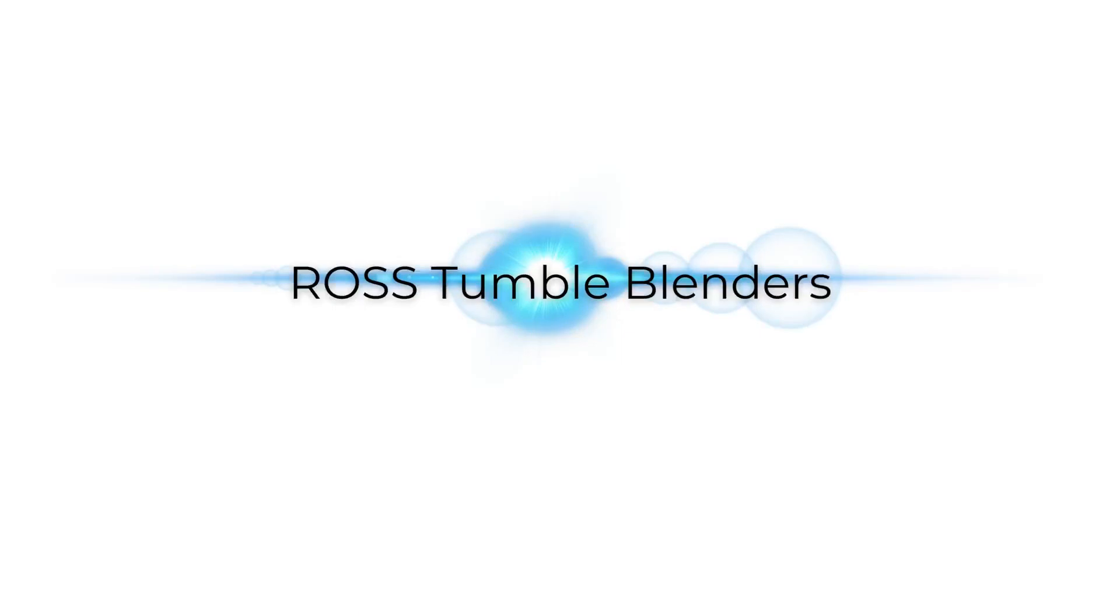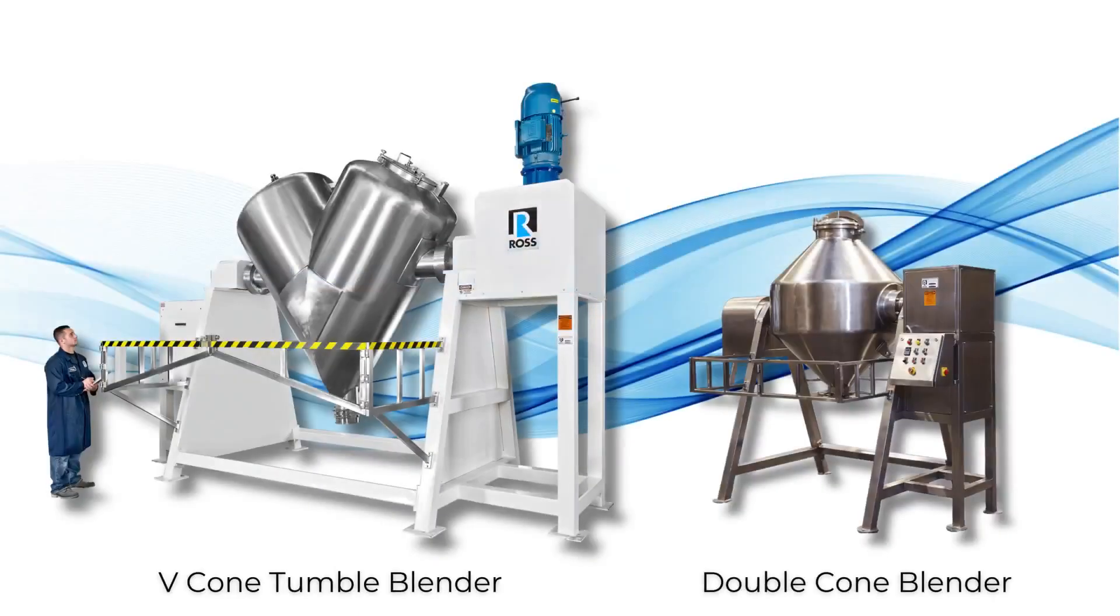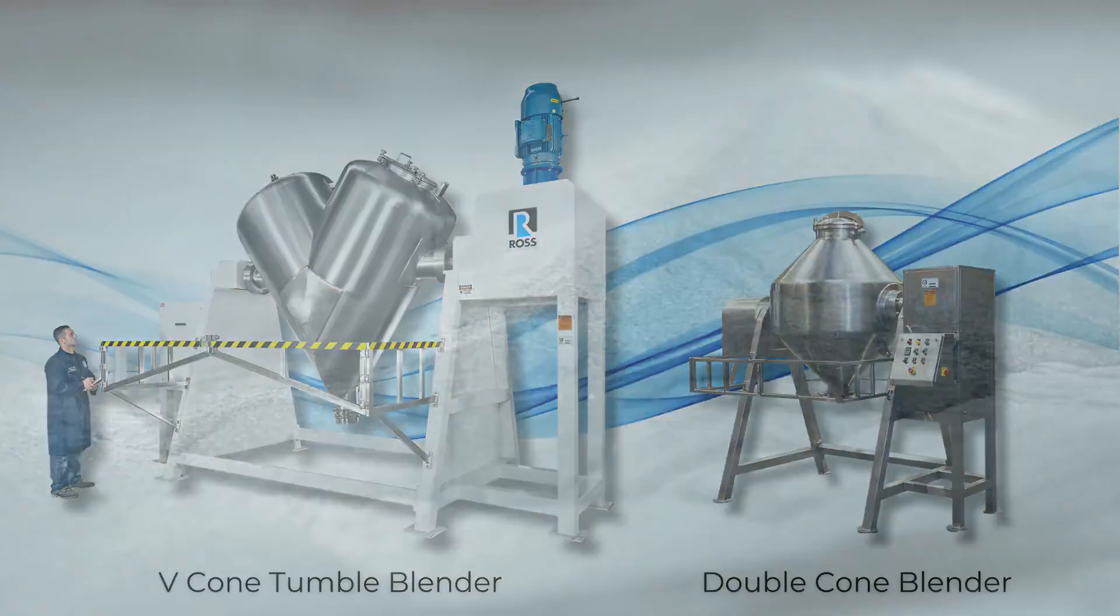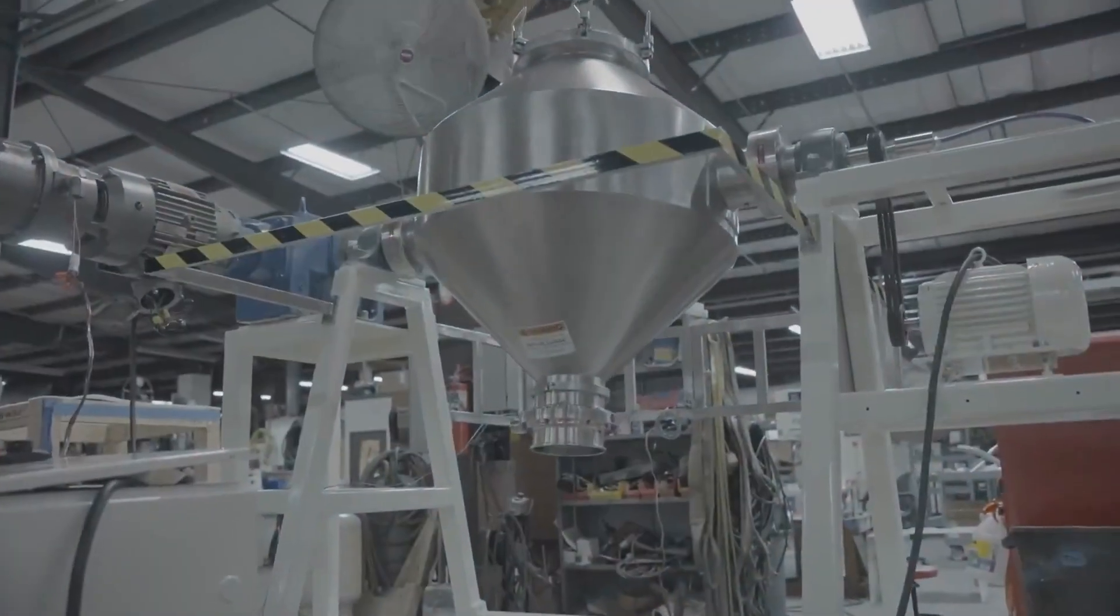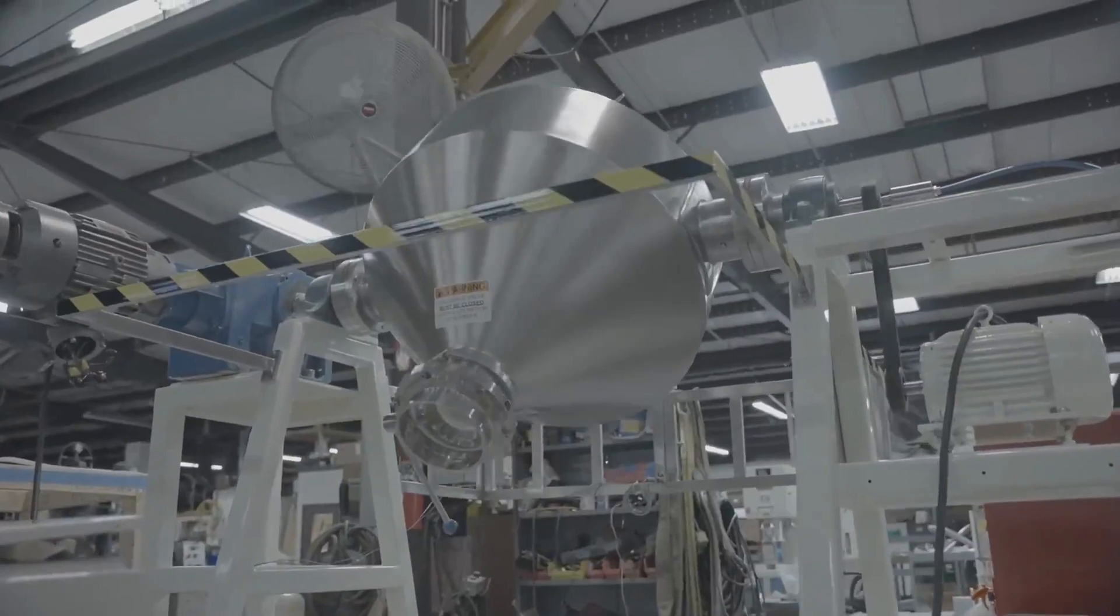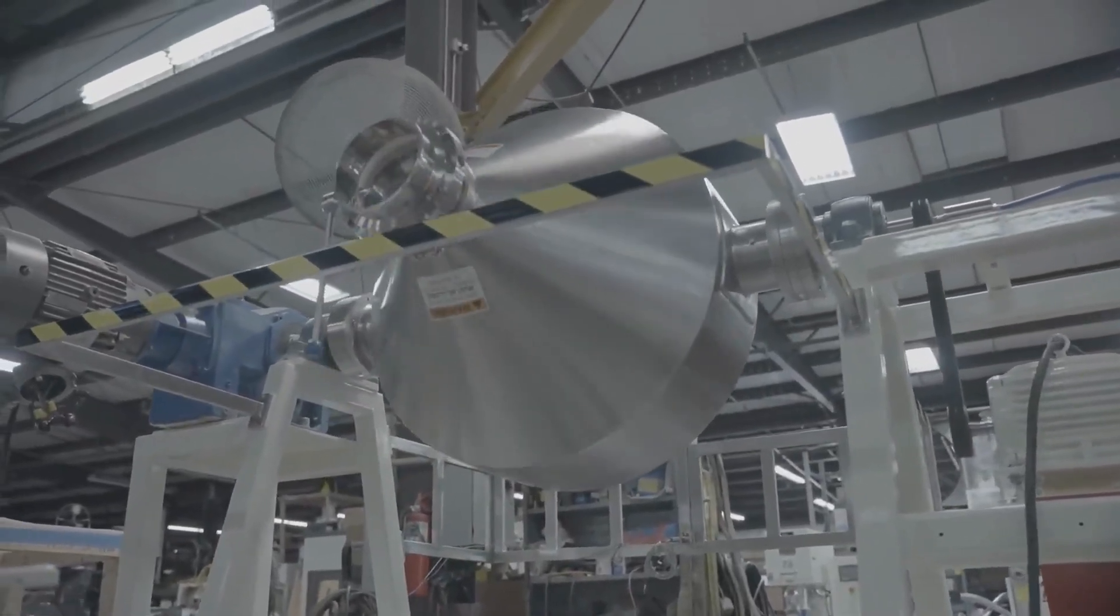Ross tumble blenders are ideal for handling metal and alloy powders used in 3D printing which can have an extremely high bulk density. Tumble blending is very low impact and appropriate for processing abrasive solids and friable ingredients.